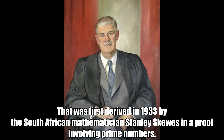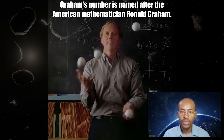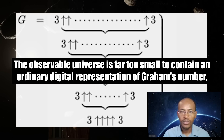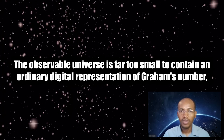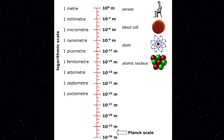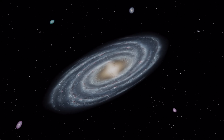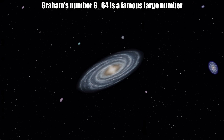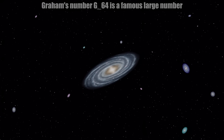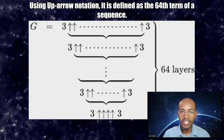Next up, Graham's number, named after American mathematician Ronald Graham. This number is so large that the observable universe is far too small to contain an ordinary digital representation of it, even assuming each digit occupies one Planck volume — possibly the smallest measurable space. The number was published in the 1980s Guinness Book of World Records. Graham's number, or G64, is defined as the 64th term of a sequence using up-arrow notation.